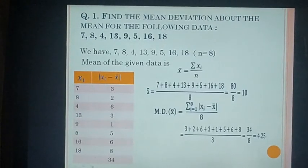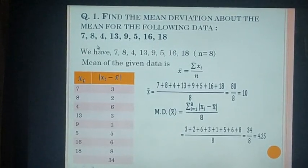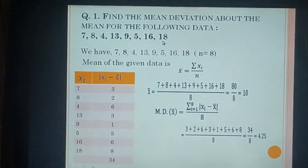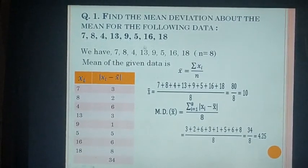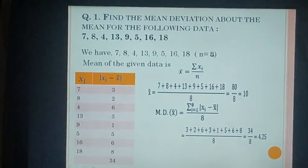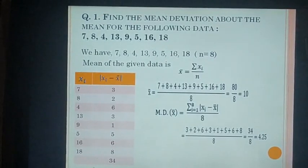Let's see one example. Find the mean deviation about the mean for the following data. The observations are 7, 8, 4, 13, 9, 5, 16, and 18. There are a total of 8 observations, so n = 8. In the first step we will find the mean, x̄.